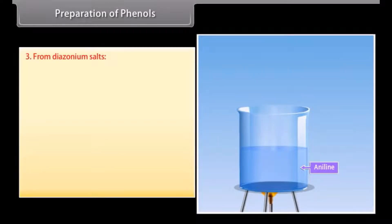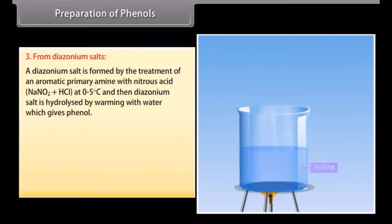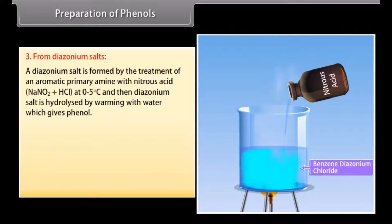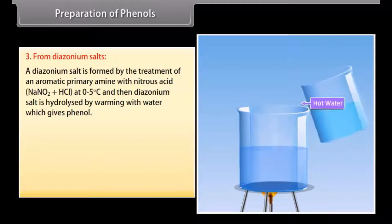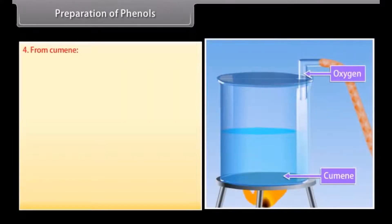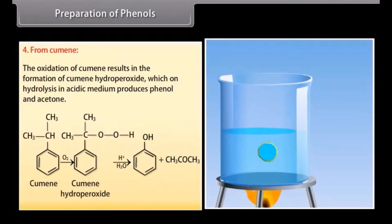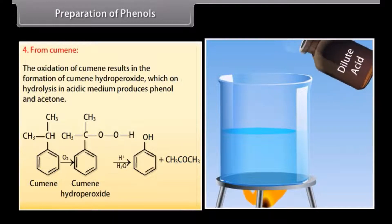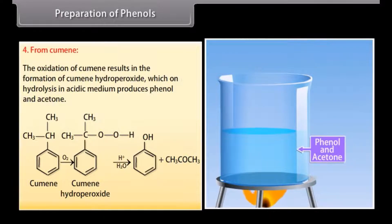Preparation of phenols from diazonium salts. A diazonium salt is formed by treating an aromatic primary amine with nitrous acid at 0–5°C; the diazonium salt is then hydrolyzed by warming with water to give phenol. For example, aniline treated with nitrous acid at 0–5°C gives benzene diazonium chloride, which on addition of warm water yields phenol, nitrogen and hydrochloric acid. From cumene: oxidation of cumene gives cumene hydroperoxide, which on hydrolysis in acidic medium produces phenol and acetone.